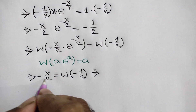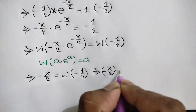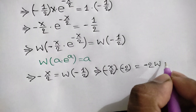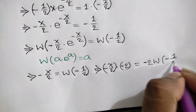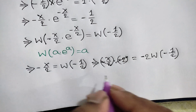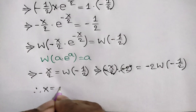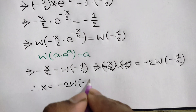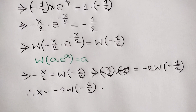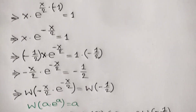Multiplying both sides by negative 2, the negative 2 cancels, and we get x. So finally the value of x is equal to negative 2 times W of negative half, and that is our final answer. Thanks for watching — if you like this video please subscribe to my channel, see you in the next video, bye bye.